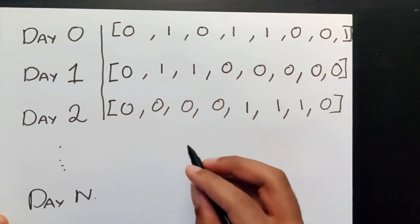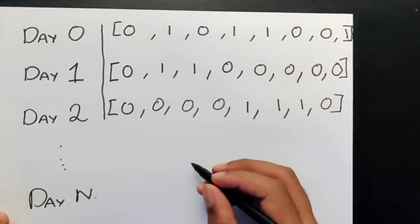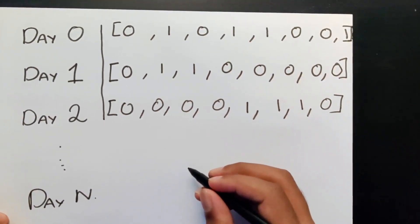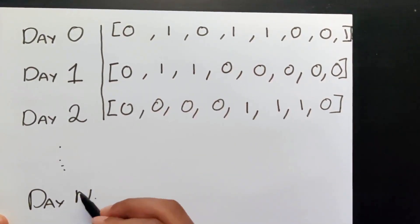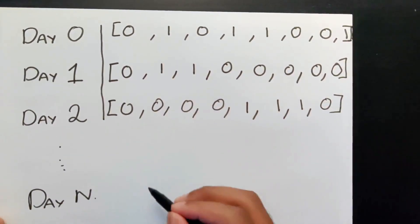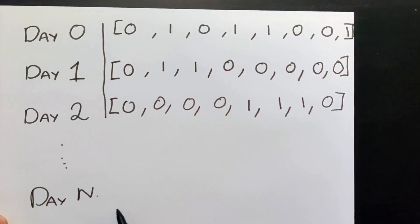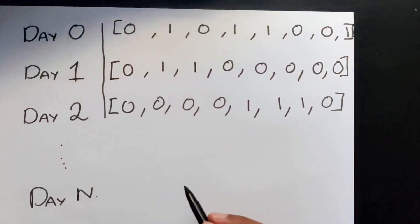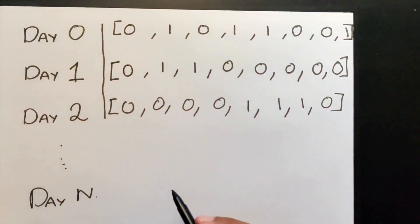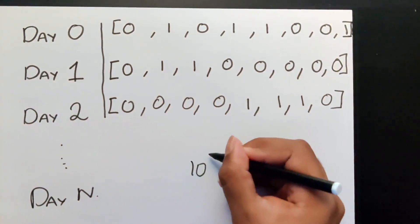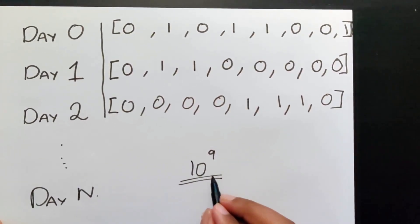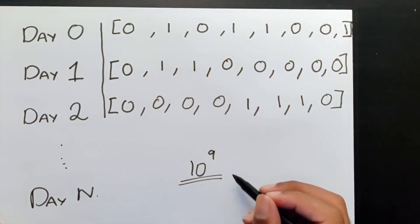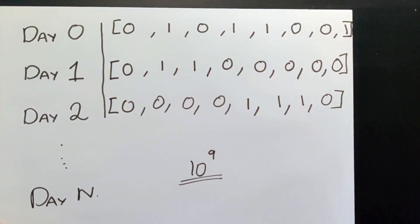So now we have to think about how we're going to approach this question. My first thought was to iterate through how many days there are — if there are a hundred days, we go through the cycle a hundred times until we reach day hundred and print that result. But if you look at the question, N can be as big as 10 to the power of nine. So if we had such a huge N value, this is going to take a lot of time and it's not at all efficient. So we're going to try to look for a better solution, and that involves looking for some sort of pattern.